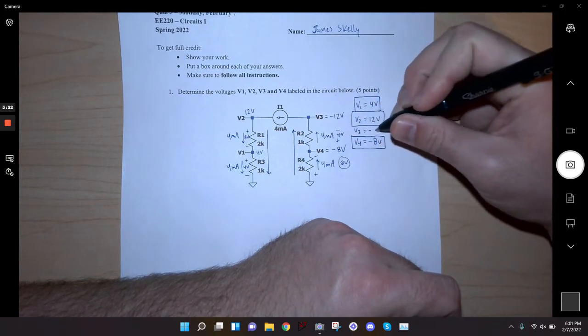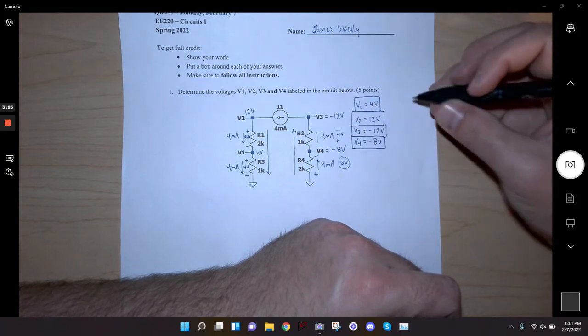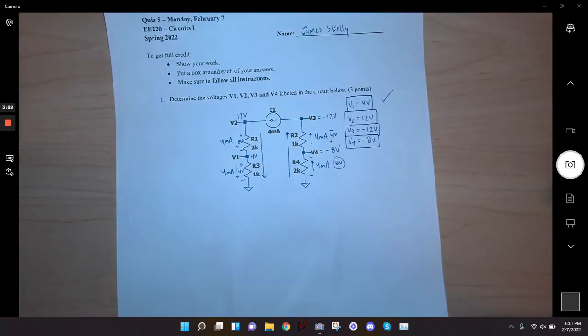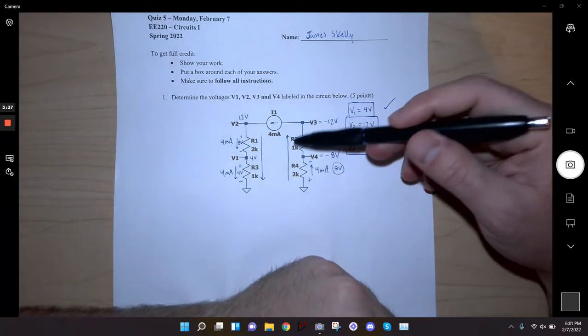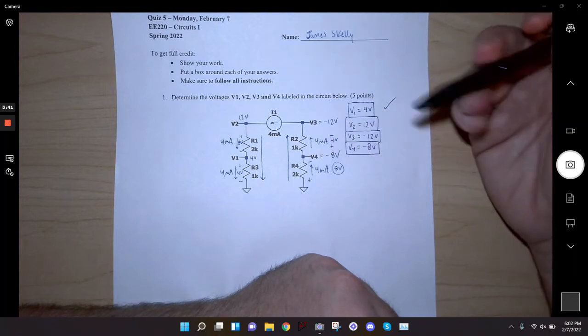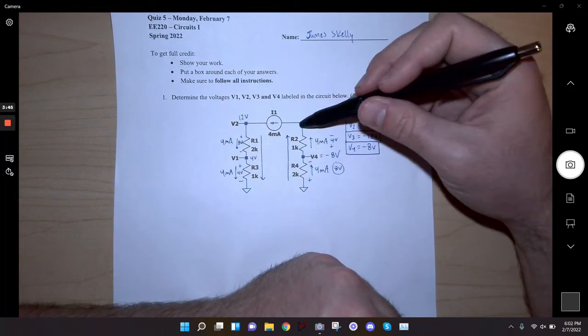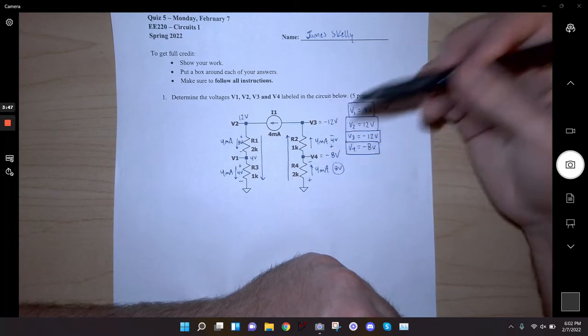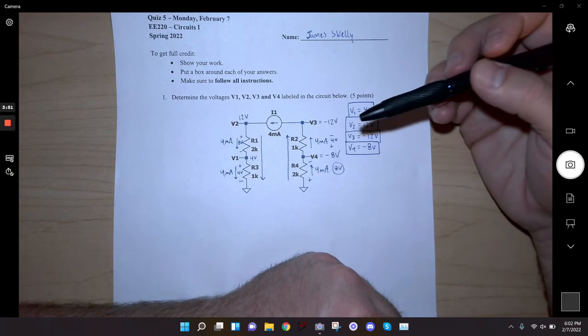So v3 is negative 12 volts, and that's my quiz right there. It seems like a lot of people made the mistake of not really understanding that when I take I times R, that gives me the voltage drop across the resistor—basically the difference between the two voltages. It doesn't tell me the voltage on one side or the other side, it tells me the voltage drop across that resistor.